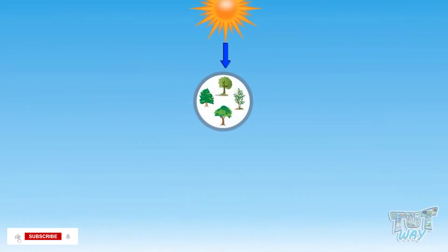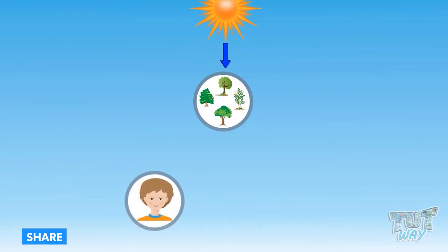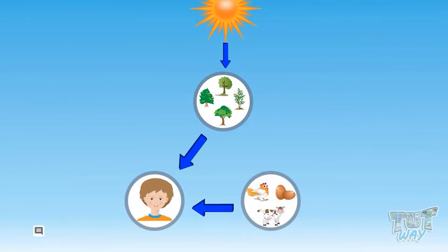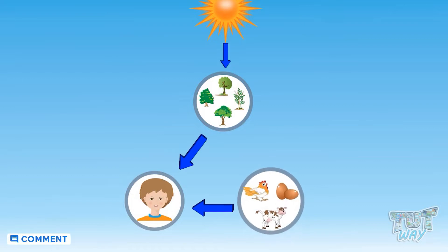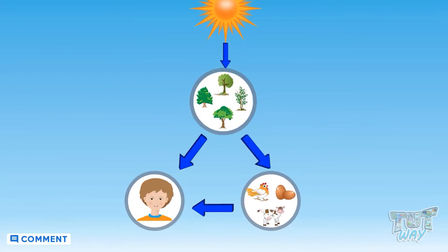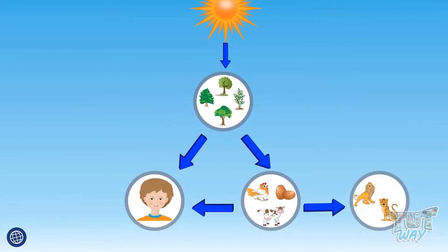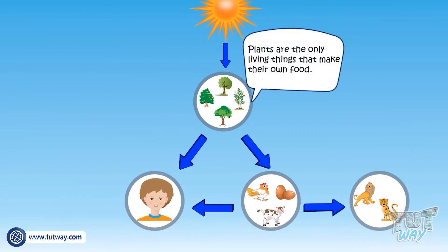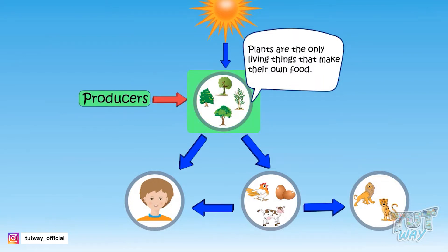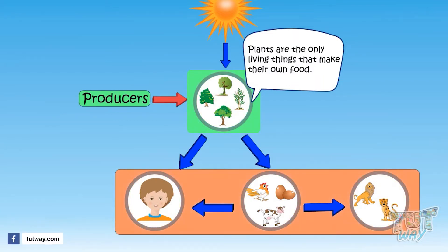Plants are the only living things that produce their own food. We humans get our food from plants or animals. Animals get their food from plants or other animals. But plants are the living organisms that make their own food and are called producers. And all the other living beings are consumers.